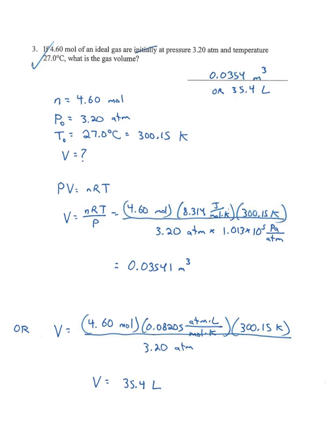Number three: 4.60 moles of a gas are initially at pressure 3.20 atmospheres. I wrote initially, but the pressure in this problem isn't going to change, so I've just ignored the word initially. Temperature is given, 27 degrees Celsius. What is the gas volume? We have n = 4.60 moles, P = 3.20 atm, temperature is 300.15 Kelvin.